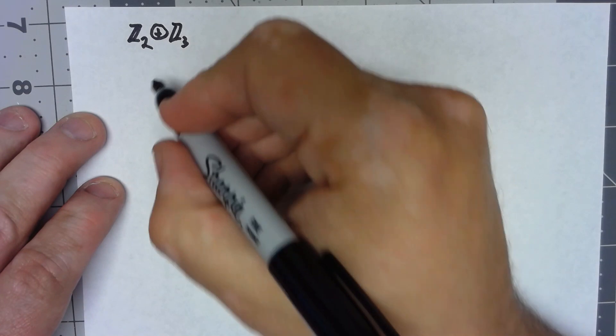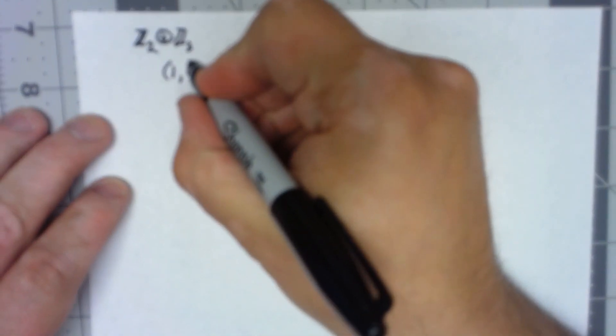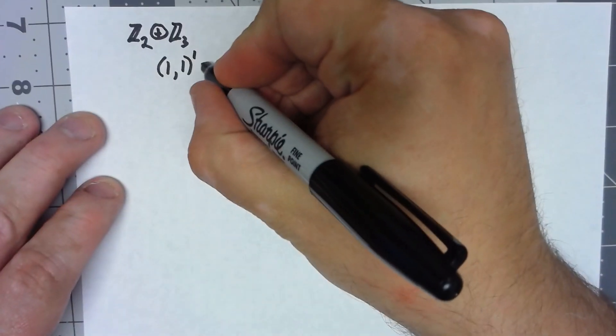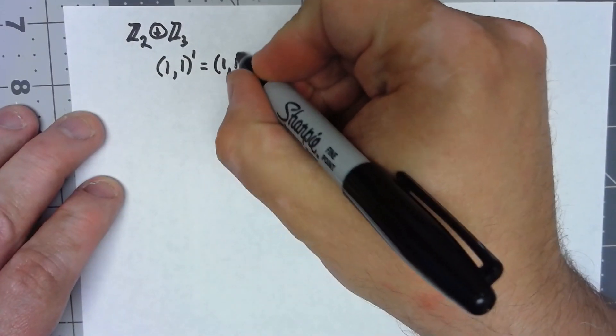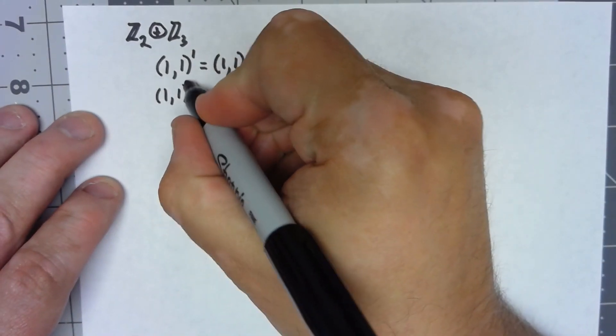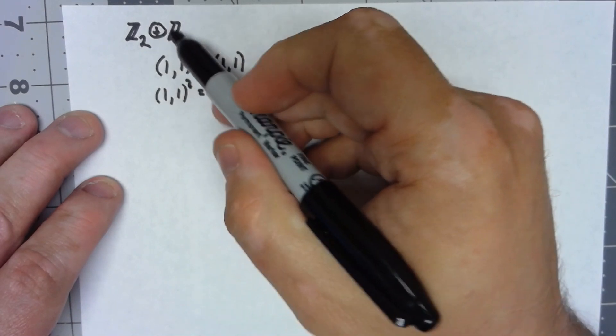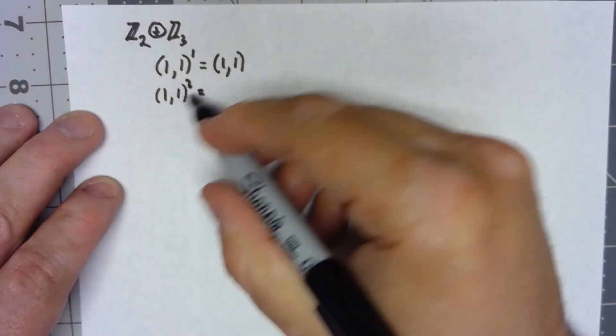Let's see if we can find the order of the element (1,1). Well, obviously (1,1) to the first is (1,1). (1,1) squared, and remember that the operation is really addition for Z2 and Z3.